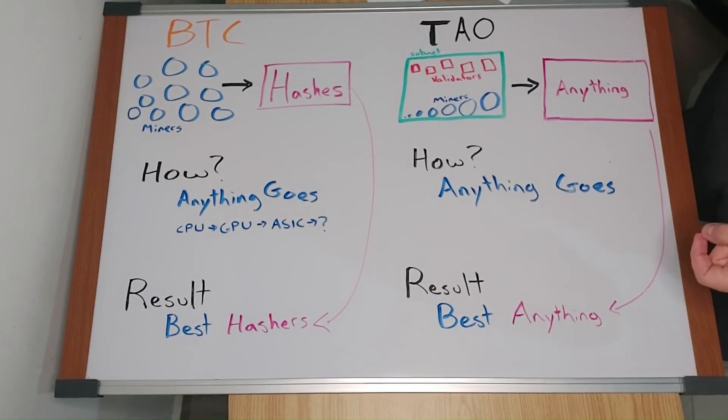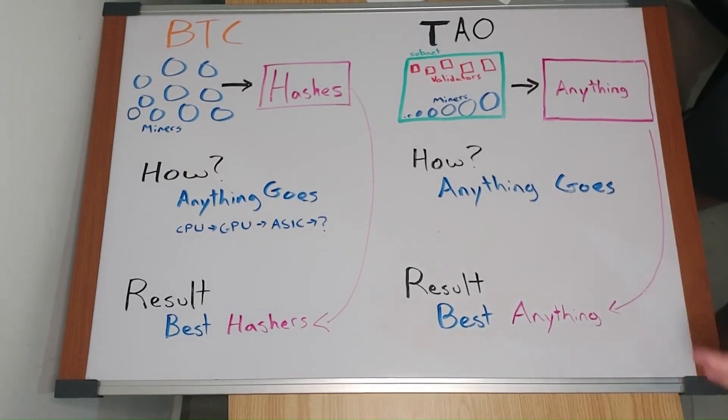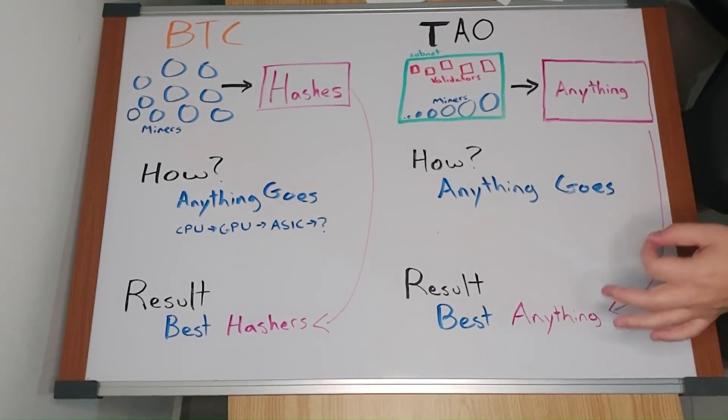One example that jumps to my mind is advertising. Reddit, YouTube, Facebook, TikTok, any social media runs on advertising. What happens when BitTensor does advertising better than everything else? What happens to those platforms? Unimaginably large in scale.